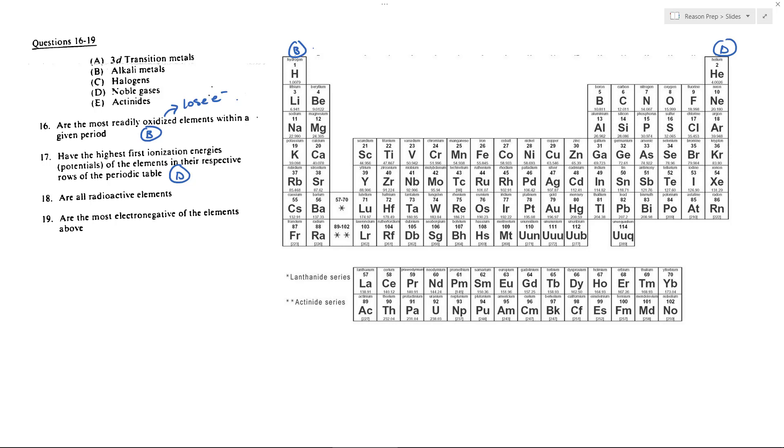Which are the radioactive elements? Once you get past bismuth, usually including bismuth, there's some debate on that, but bismuth and beyond are typically going to be seen as radioactive elements. Anything beyond 83 will be radioactive.